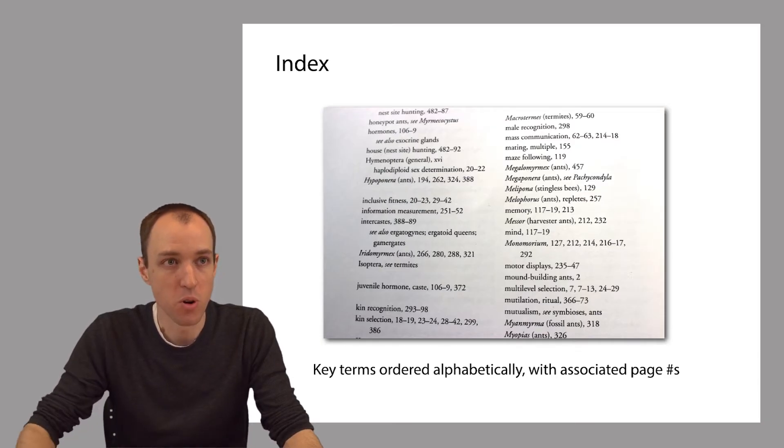If we're trying to find more information about, for example, memory, we can look memory up in the index. This is very convenient and easy for us to do because the key terms are in alphabetical order. The index tells us which pages to look on for more information about memory. It's obviously a lot more convenient than just scanning through the entire book looking for mentions of the word memory.